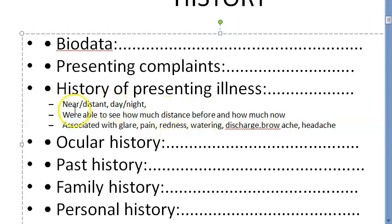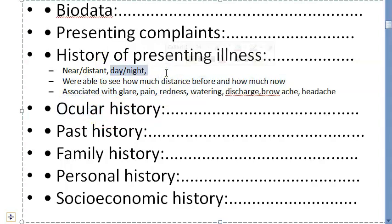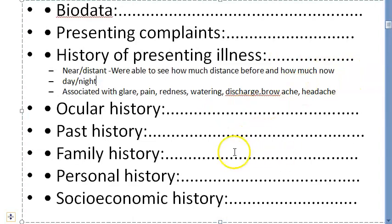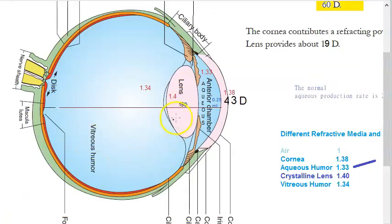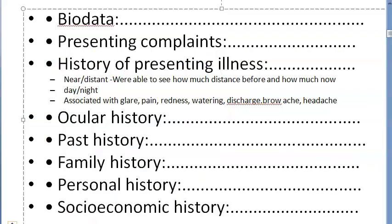Find out how much they were able to see before the symptoms started and how much they can see now. Ask whether the diminution is more during the day or at night. If it is worse during the day, it suggests nuclear cataract, since anything central causes day blindness. If worse at night, it suggests cortical cataract. If both, it suggests posterior subcapsular or polar cataract. Also ask about glare — an early symptom of cataract.